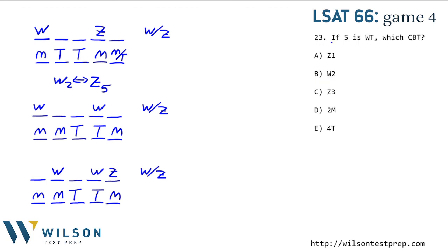Number 23 asks, if the fifth solo is Wayne playing a traditional piece, which of the following could be true? So the fifth can't be traditional in here. So we must be in this case, right? And so, if we have Wayne fifth playing a traditional piece, then of course we have to have Z second, because two and five are different from each other.